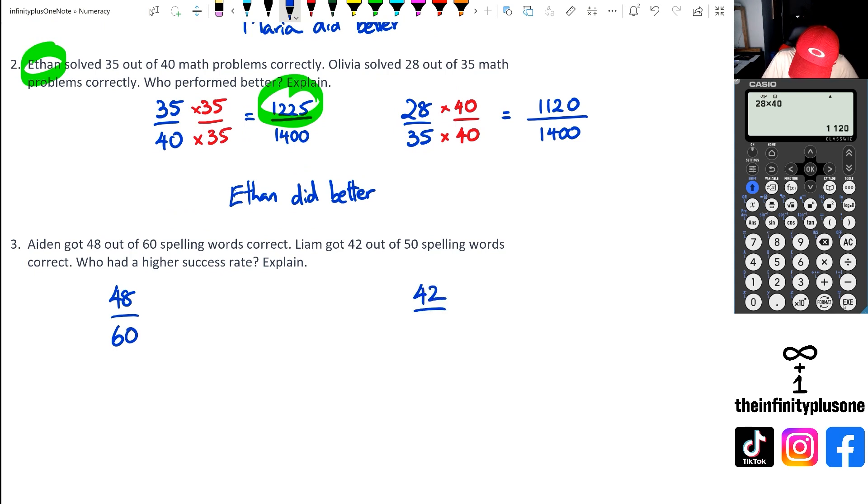All right, so let's have a look at question number three. We've got Aiden that's actually got 48 out of 60. Liam, who's actually got 42 out of 50. And again, I'm forgetting that it's 60 and 50. And I'm thinking about it as six and five. If I think about it as six and five, the lowest common multiple between six and five, I know it's going to be 30. So that means for 60 and 50, I'm going to get 300 as my lowest common multiple. So I'm going to put down 300 on one side. On the other side, I'm also going to put down 300.